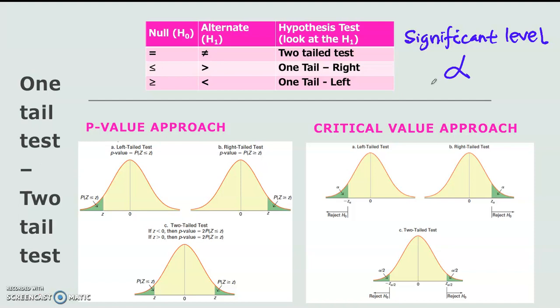But in economics, we usually use alpha 1%, 5%, or 10%. This value of significance level will be used to construct the rejection rule.